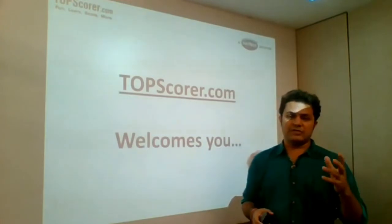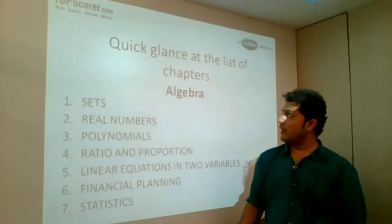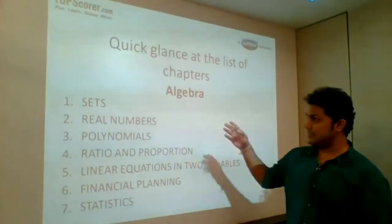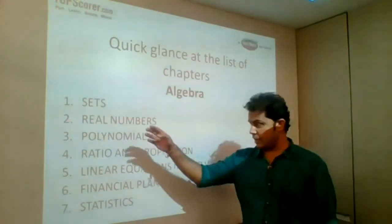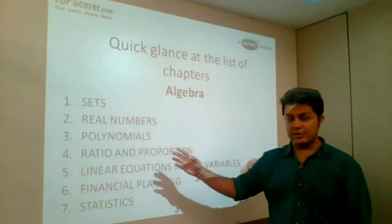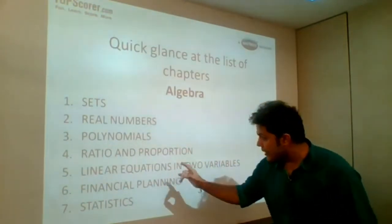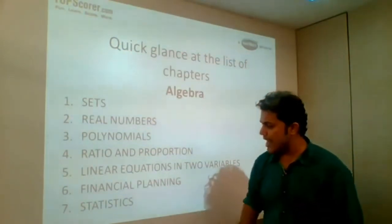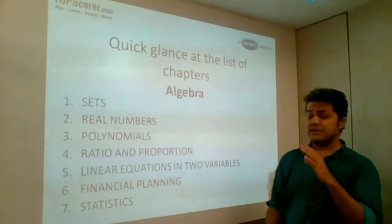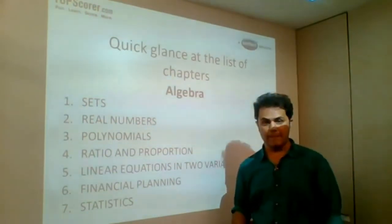Now we will have a quick glance at the list of the chapters that we have for algebra. For algebra we are having sets, real numbers, polynomials, ratio and proportion, linear equations in two variables, financial planning, and lastly statistics. Your algebra paper is going to be for 40 marks.